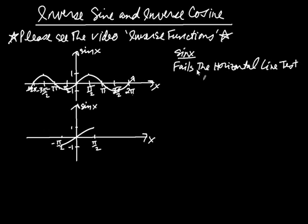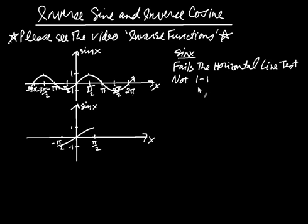The consequence of failing the horizontal line test is that the function is not one-to-one. To create an inverse, you need a one-to-one function. Functions that are not one-to-one — that implies there is no inverse function.